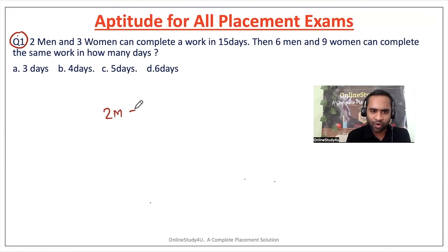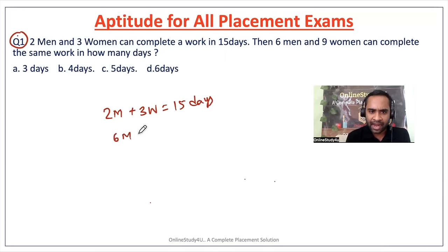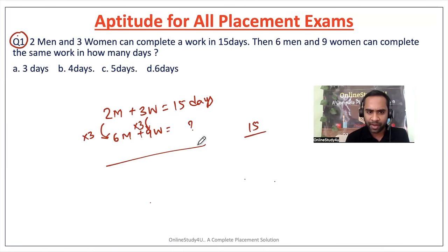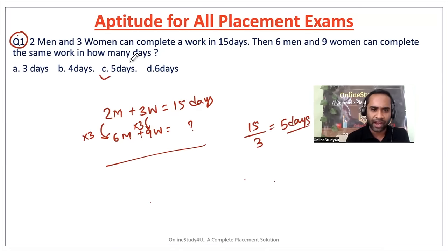Two men and three women can complete a piece of work in 15 days. Then six men and nine women will be able to complete the work in how many days? If we analyze, this is nothing but three times — both the men and women are multiplied by three. So divide the days by the multiplication factor: 15 divided by 3 gives five days, which is the correct answer.